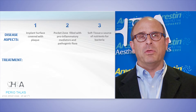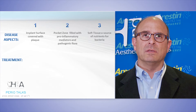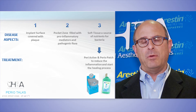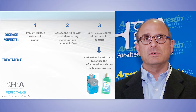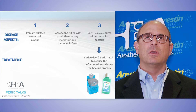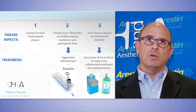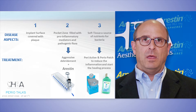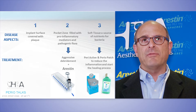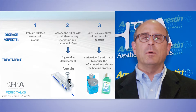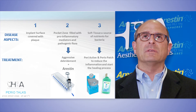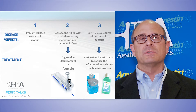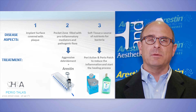We have to treat all three aspects. What we do is we treat the soft tissue with a combination of periactive and periopatch to reduce the inflammation and start the healing process. We treat the center zone with the bacteria and the pro-inflammatory mediators with aggressive debridement, including a cavitron, occasionally profi-jetting with glycine-based materials, as well as sustained release antimicrobials, for example, arrestin.